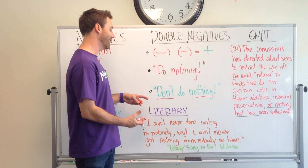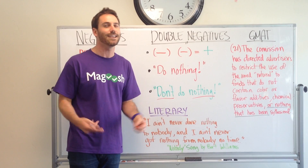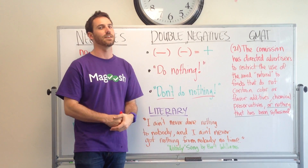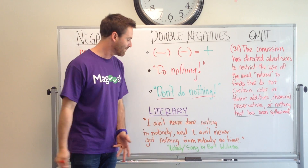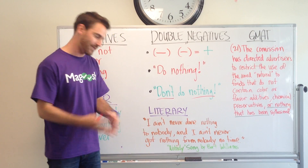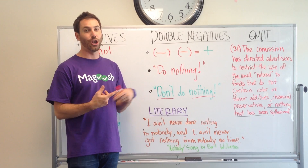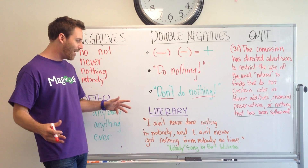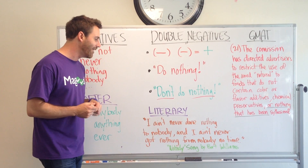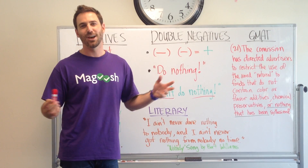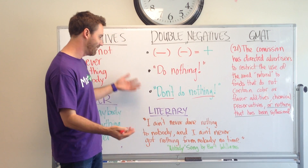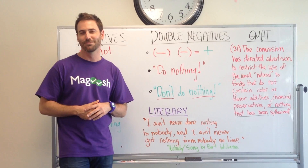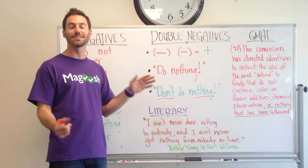That's why sometimes double negatives end up in speech and why people use them — it can be a more compelling way to say something. Instead of saying 'do something,' you say 'don't do nothing.' I have a literary example here; this comes from a song called 'Nobody' by Bert Williams. It says: 'I ain't never done nothing to nobody, and I ain't never got nothing from nobody, no time.' It's much more interesting than saying 'I've never done anything to anyone and I never get things from people.' That's not exciting — it wouldn't have been such a memorable song.